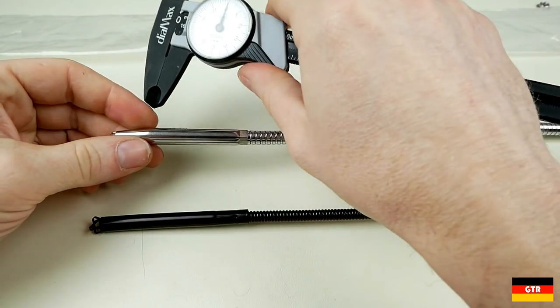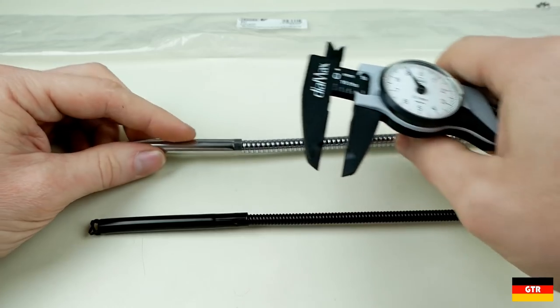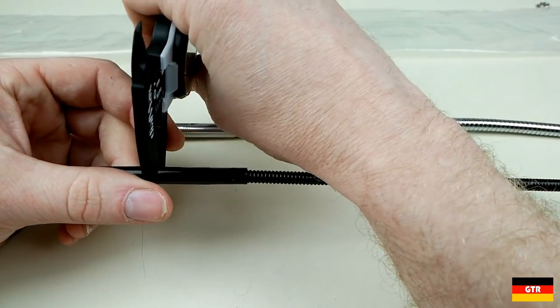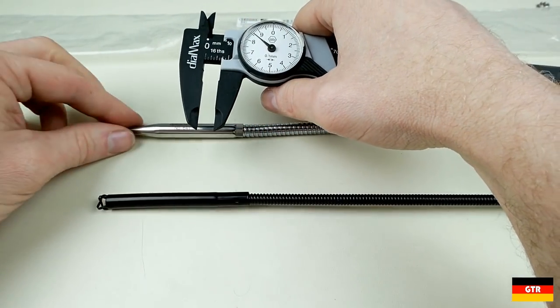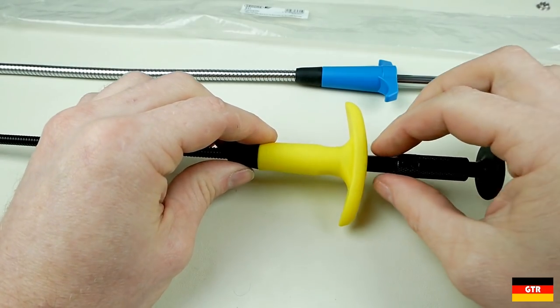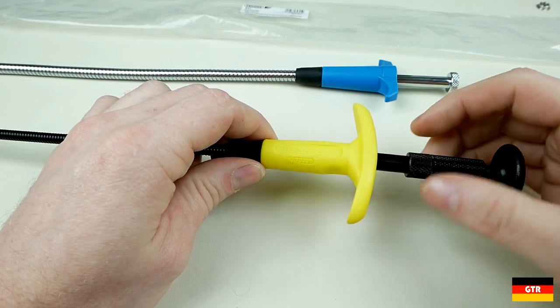So look at some of the basic specs here. It looks like the diameter of this tube right here is just over 9 millimeters on the Gedore one. And on this guy, it's a little bit smaller, 8.5 millimeters.